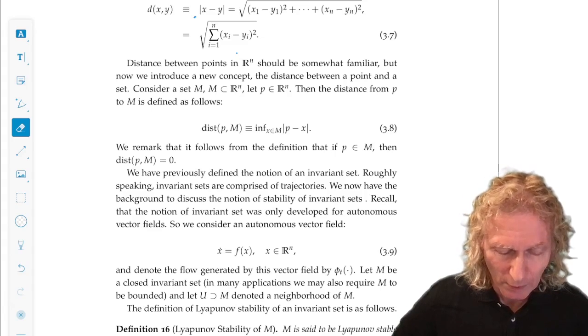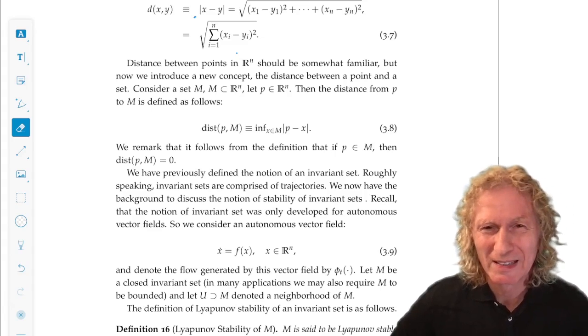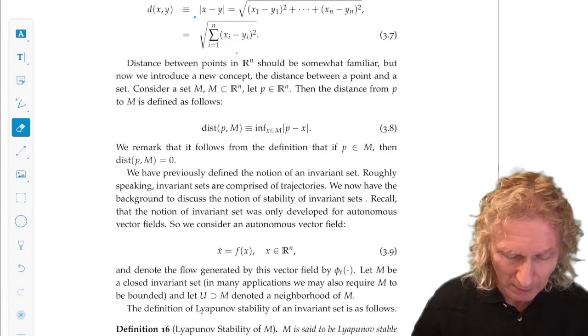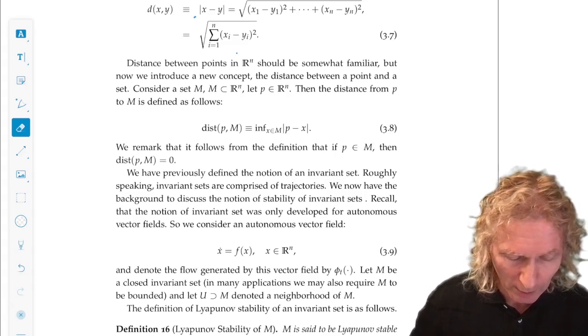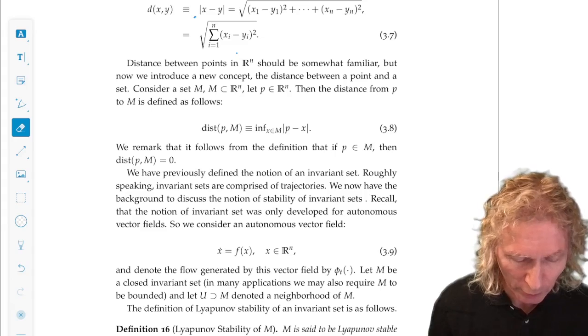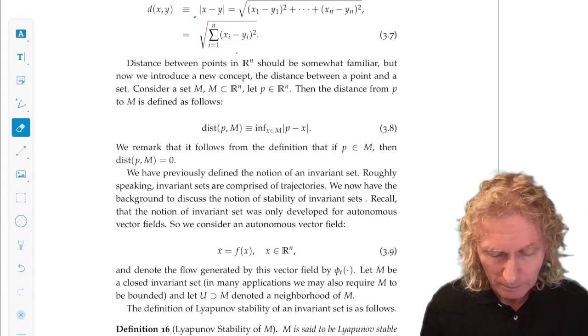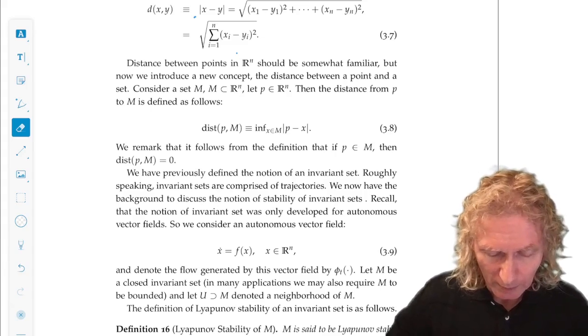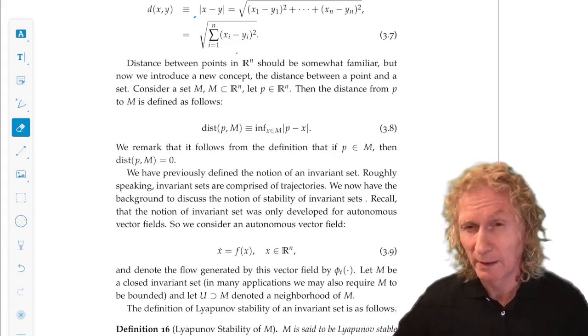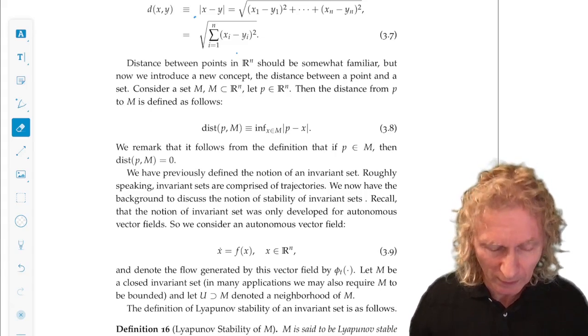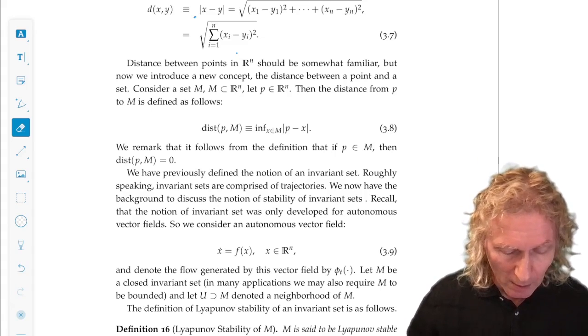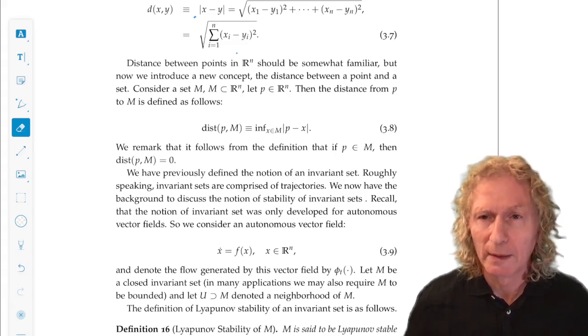So in dynamical systems theory, we have a little bit of a different terminology. We often talk about an attracting set. And this is a definition of M is asymptotically stable, it is said to be an attracting set. That makes perfect sense. Attracting, get closer and closer.